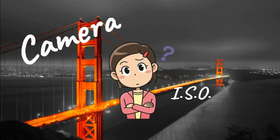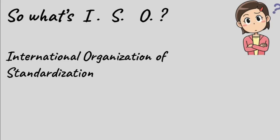Now let's talk about the third and the last pillar of photography, ISO. So what is ISO? ISO is short for International Organization of Standardization.